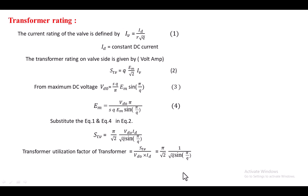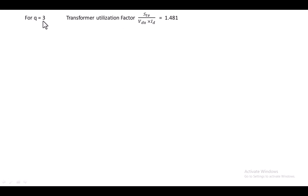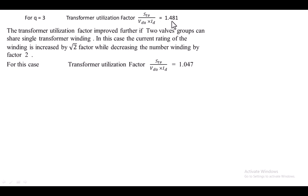The transformer utilization factor depends strongly on the q value. For q = 3, meaning three devices per commutation group, the transformer utilization factor is high at 1.481. This also matches the number of phases used to supply power to the converter. The transformer utilization factor can be further improved by using one transformer winding to supply power to two valve groups simultaneously, which increases the current rating of the winding by a factor of √2 and reduces the number of windings by 2. In that case, the transformer utilization factor becomes 1.047.